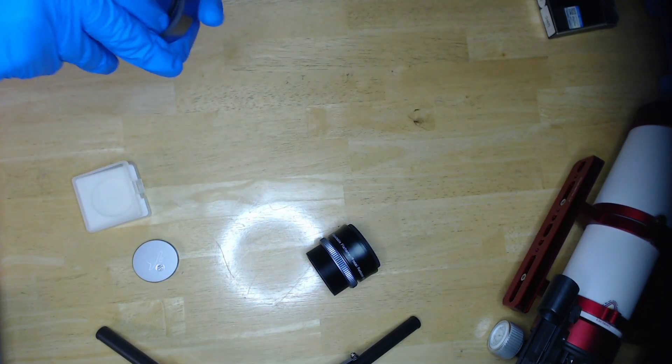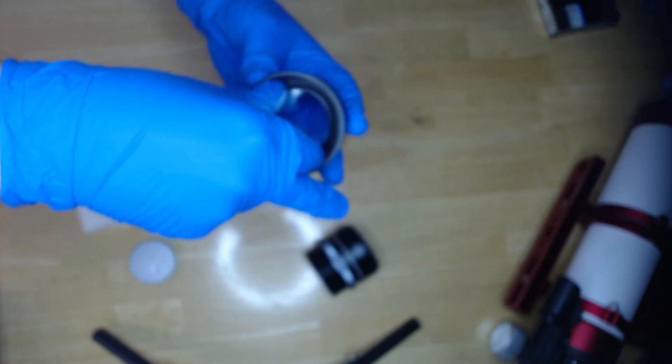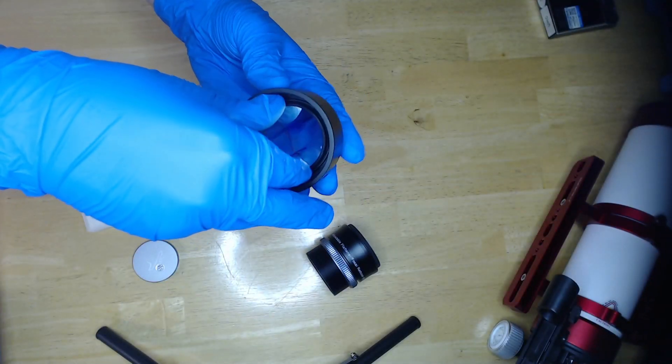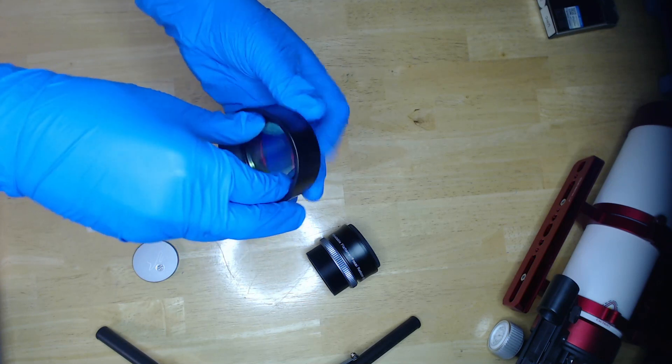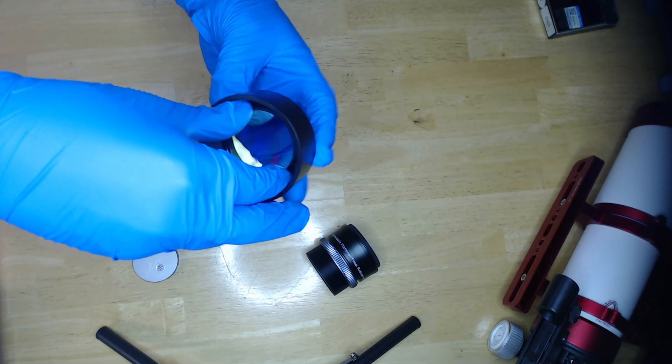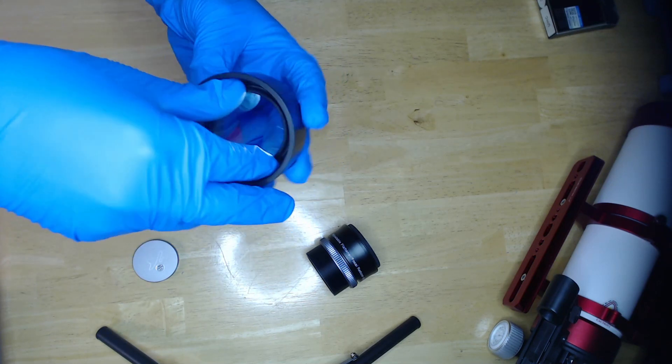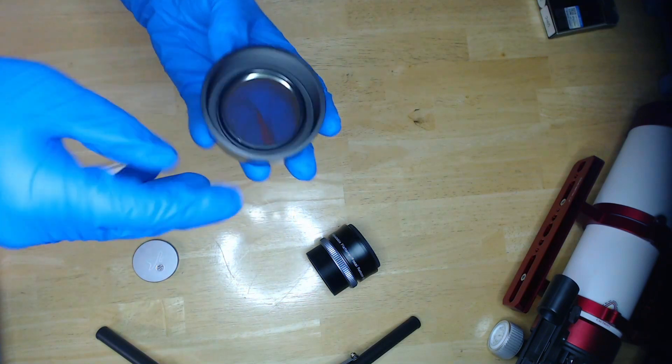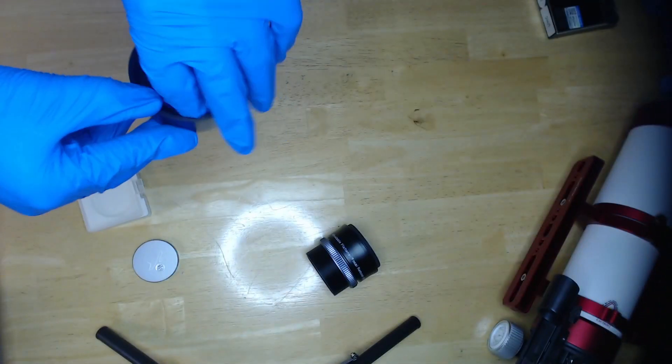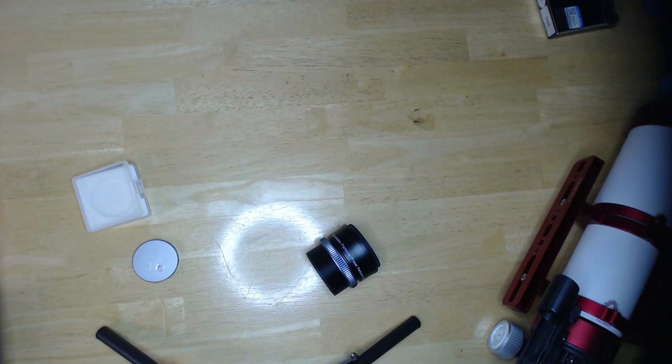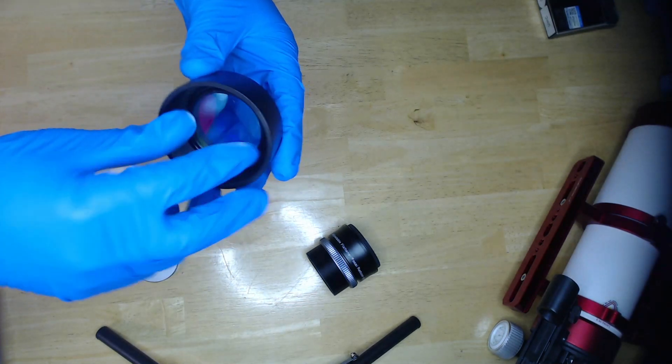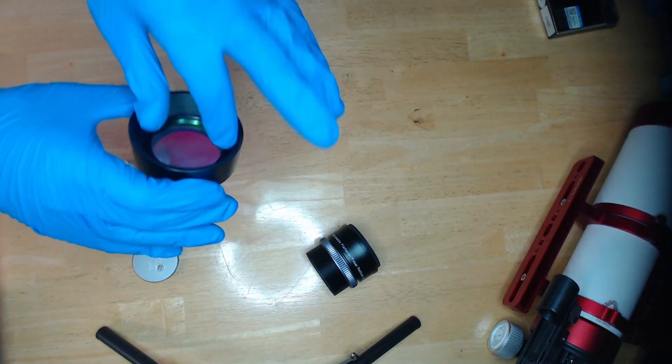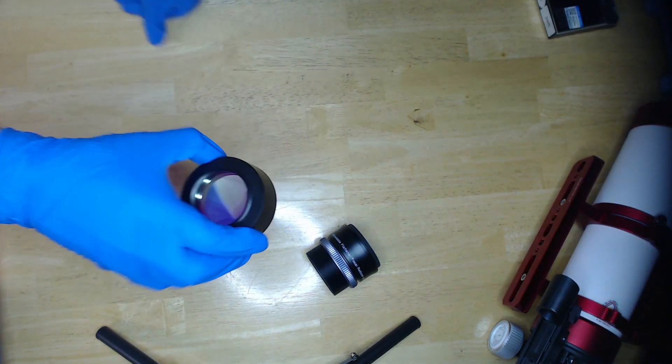Once you have it aligned, start screwing it in. Be very slow and gentle. I like holding it upside down with the filter at the bottom pointed up and putting the cap on top, but I'm not showing that here because it's difficult to see. There we go. Hold it up to the light and make sure there are no smudges.